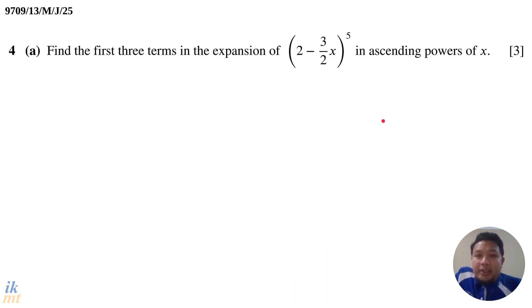This is a binomial expansion, so what we have to do is just use the formula for binomial expansion, which is already available in your MF19. The first term of the binomial is 2, and the second term of the binomial is negative 3 over 2x. So we start with applying the formula, so the first part would be 2 power 5, and then plus 5C1 times 2 power 4 times negative 3 over 2x power 1.